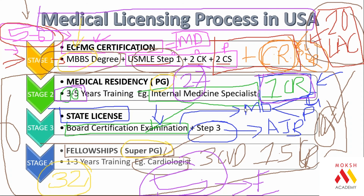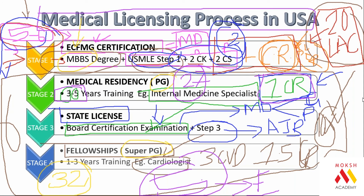For those asking about strategy for final year students — it doesn't matter whether you are in final year; this is the overall process and we will discuss timelines. If you are in final year or already a graduate, you may need to spend one extra year for Step 1 and one more year for Step 2 CS and rotations, adding two years beyond the standard six. That's why we advise students to start early to save those two years.